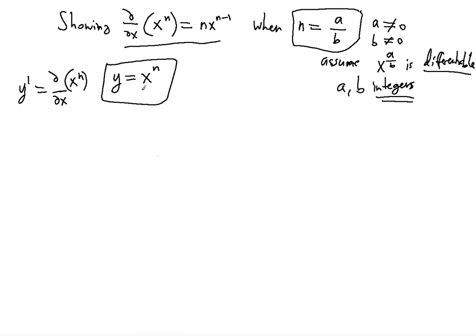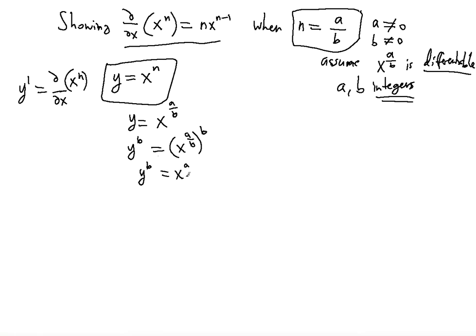So we can start with y equals x raised to the a over b power. Notice that if we raise y to the power of b, we also raise x to the power of b, and the power of a power means these powers multiply, so the b's cancel out. As a result, y to the power of b becomes x to the power of a.